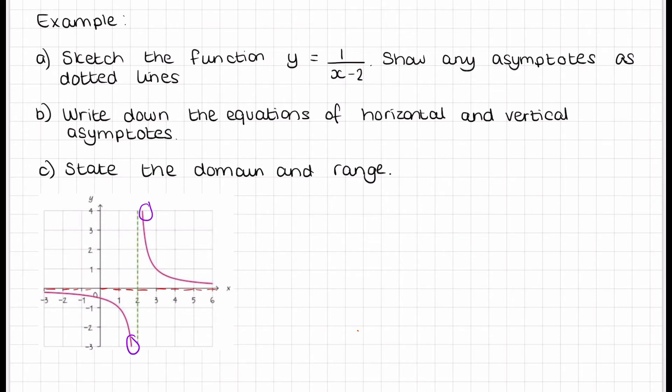Part B. We want to write down the equations of the horizontal and vertical asymptotes. The vertical asymptote is the green dotted line which is when x equals 2. That's what that graph is getting closer and closer towards but never reaches. The horizontal asymptote will be when y equals 0 because these points here are getting closer and closer to when y equals 0 but never reaches it.